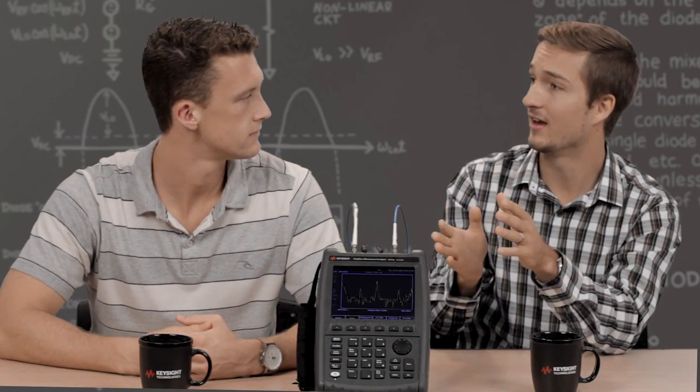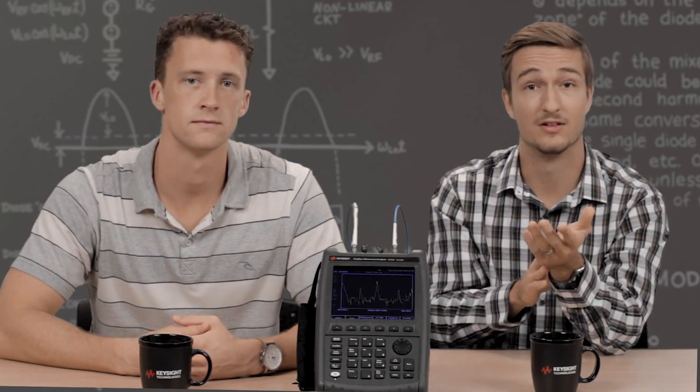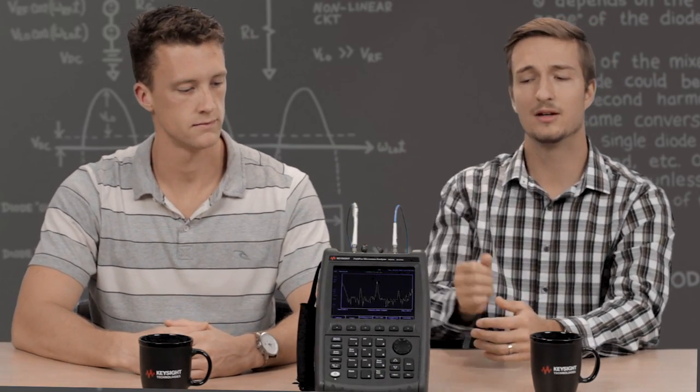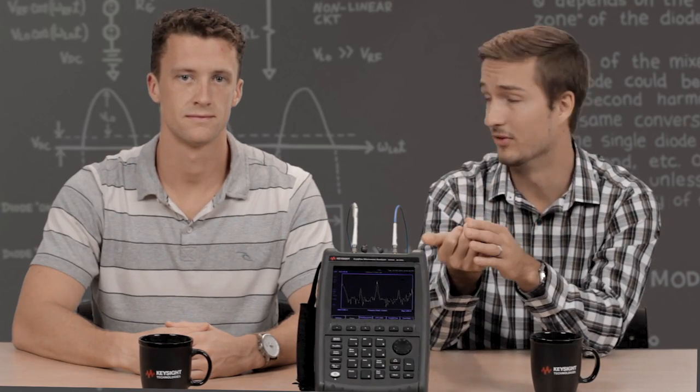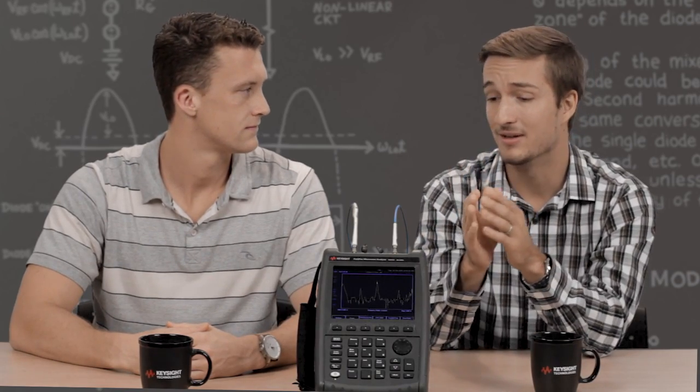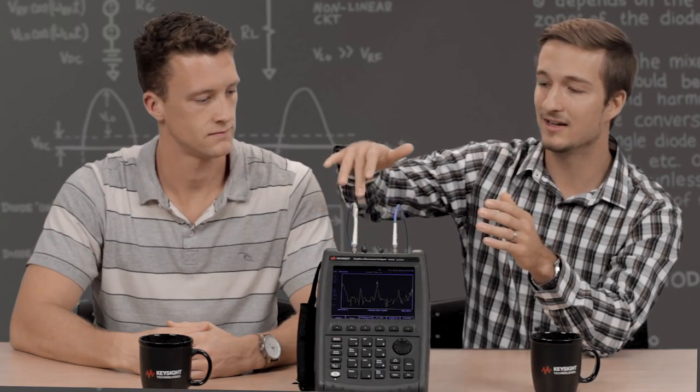So right now we have a little lab set up that's going to show off just how a FieldFox makes a distance to fault measurement. So as you can see, we have a one meter long cable connected to port one and port two of the FieldFox. What's going to happen is the signal is going to be propagated along the cable from port one towards port two.